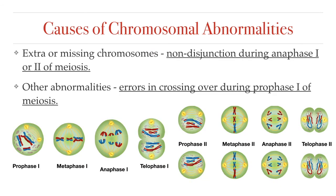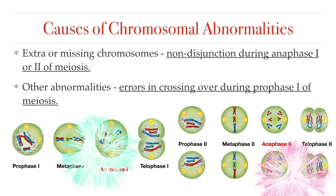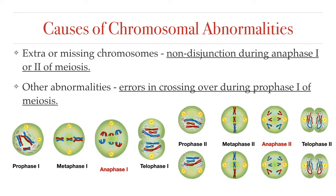Both types of chromosomal abnormalities are often a result of errors that occur during meiosis. Extra or missing chromosomes are caused by an error in the separation of chromosomes during either anaphase 1 or anaphase 2 of meiosis. This error is called non-disjunction. Changes to chromosome structure are often the result of errors during prophase 1, when homologous chromosomes exchange pieces in a process called crossing over.